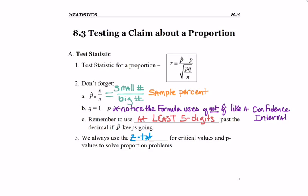As always, we're going to use the Z-table for finding both critical values and P-values. Your hint that you're using the Z-table is that the test statistic is Z equals.